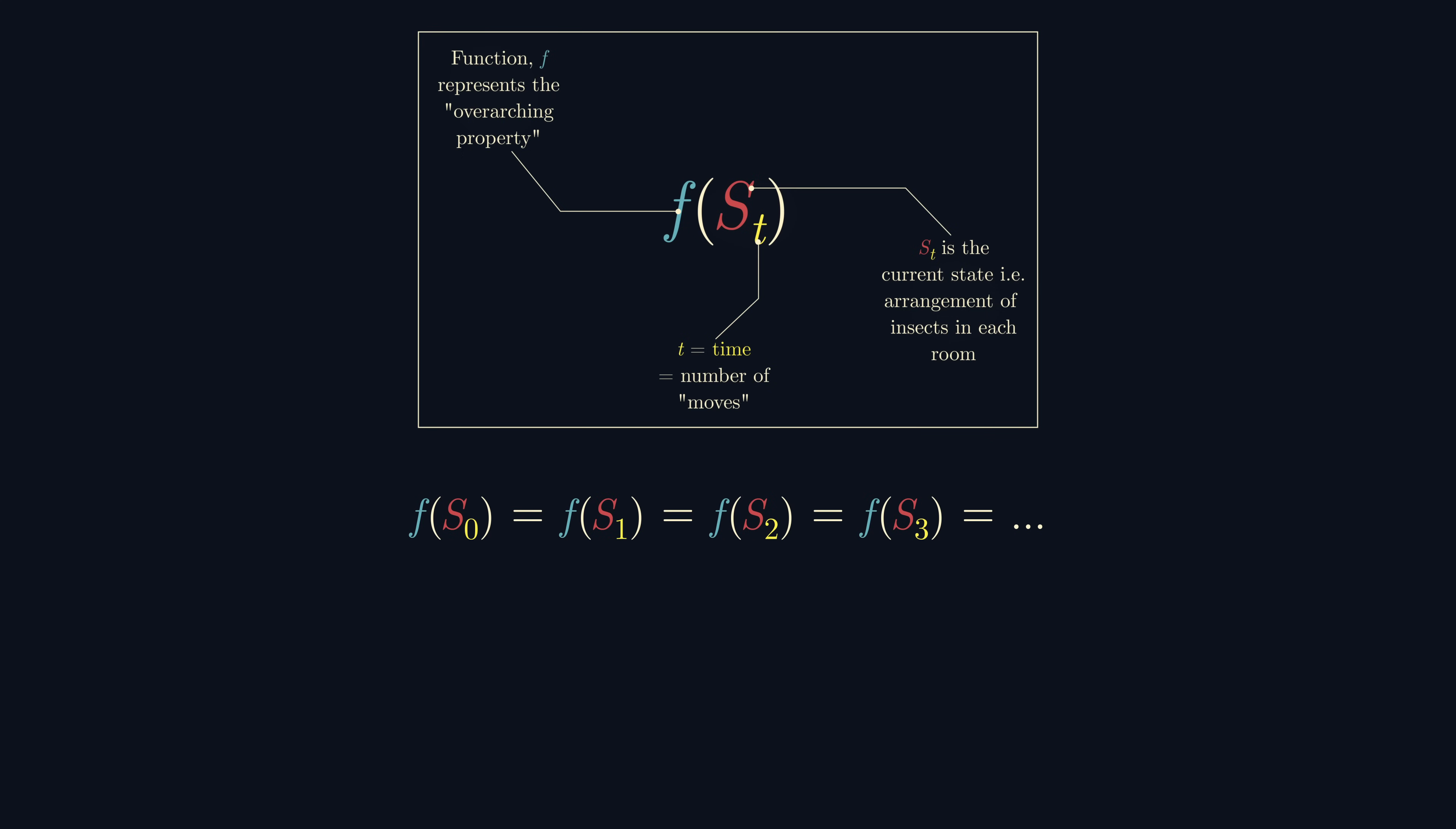Alternatively, this property might only increase or only decrease, or in other words changes monotonically after every move. What I'm talking about are invariants and mono-variants.